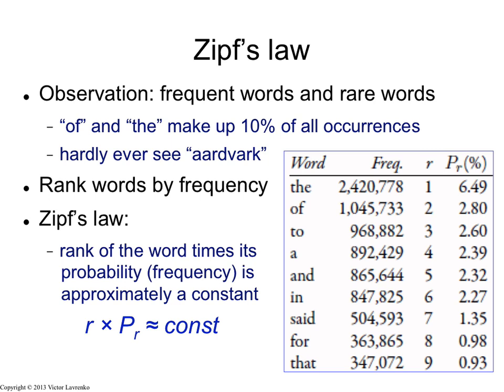That's what you have in the figure on the right of the slide — the 10 most frequent words in the collection, along with their frequencies and ranks. It's not surprising the most frequent word is 'the', which occurs about two and a half million times. 'Of' occurs a million times, 'to' occurs almost a million times, and so on and so forth.